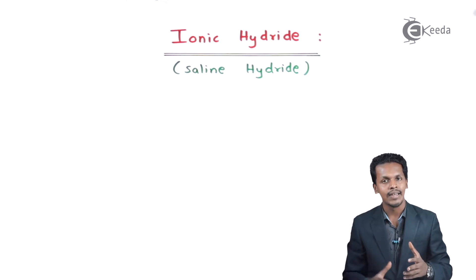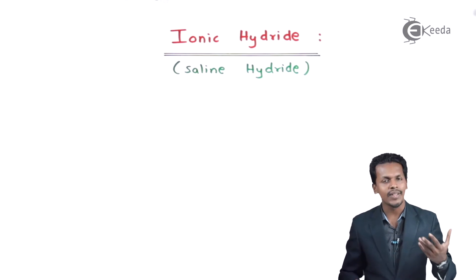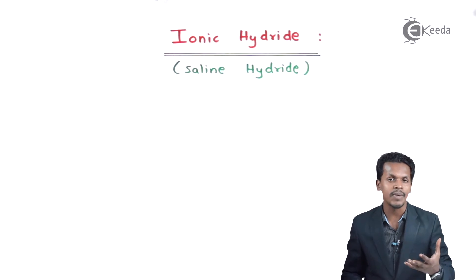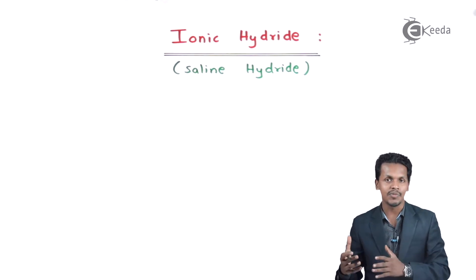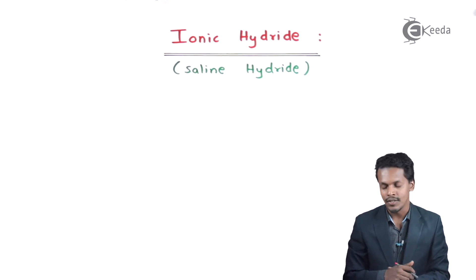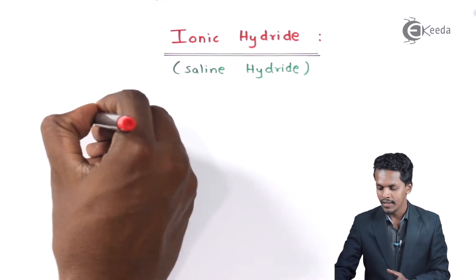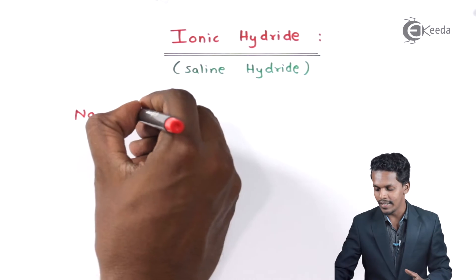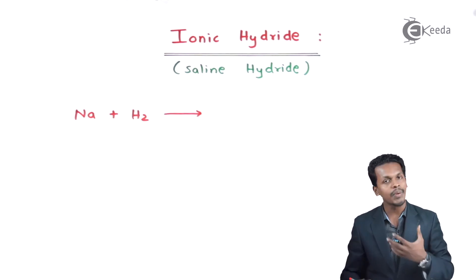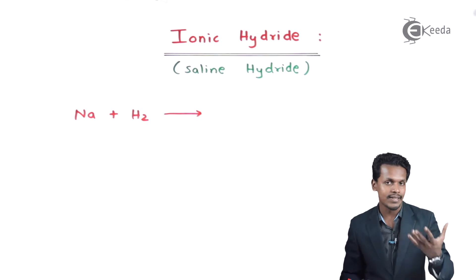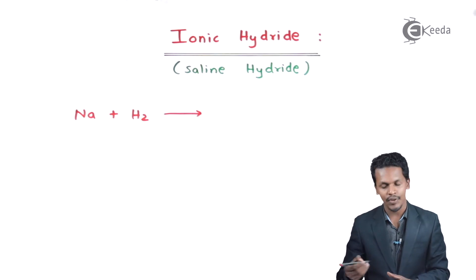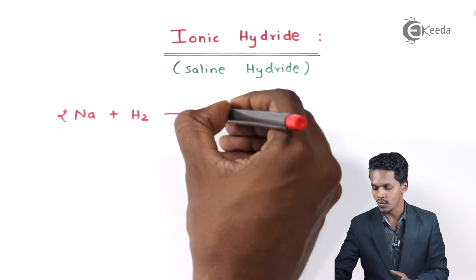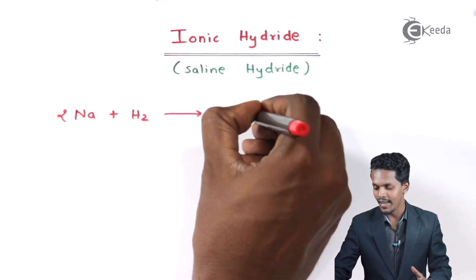Let me discuss how ionic hydrates are formed. When hydrogen combines with S-block elements, they form the respective hydrate, known as an ionic hydrate. For example, taking sodium: when it combines with hydrogen under certain conditions such as high temperature, we can prepare this hydrate. Using two moles of Na along with H₂, we get two moles of NaH.